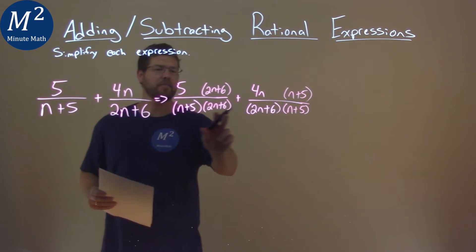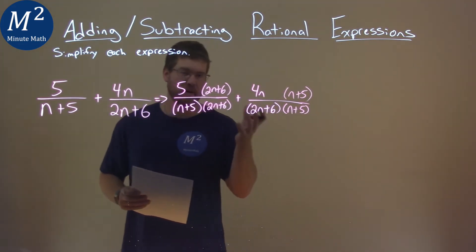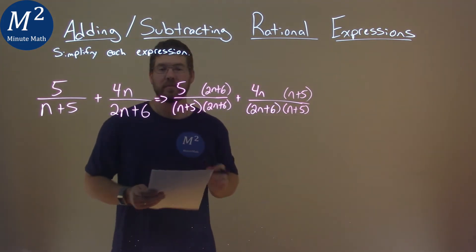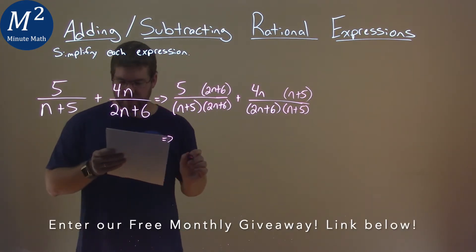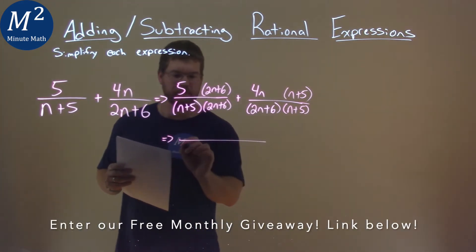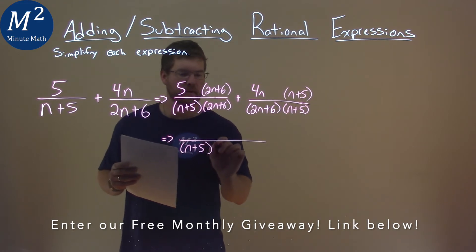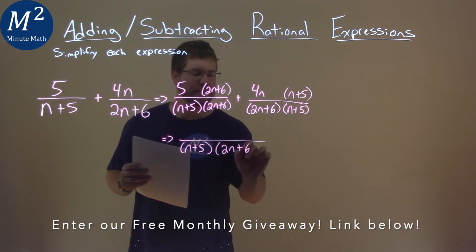And now we have the same denominator, right? n plus 5 times 2n plus 6. So now let's write this as one big fraction: n plus 5 times 2n plus 6.